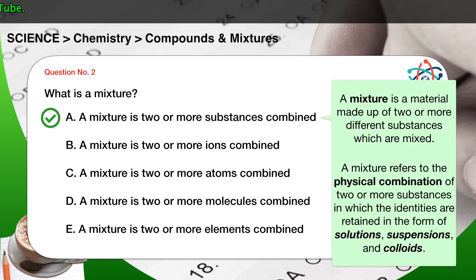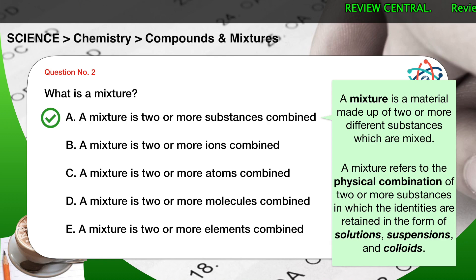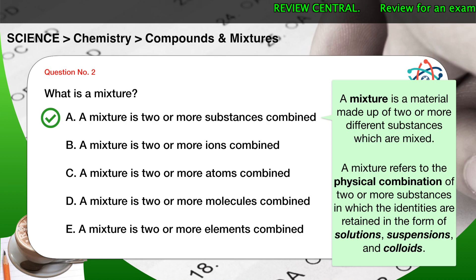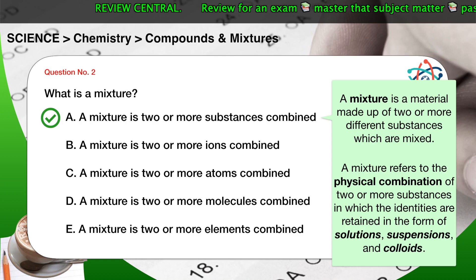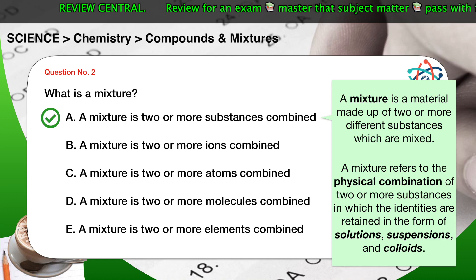The correct answer is A. A mixture is a material made up of two or more different substances which are mixed. A mixture refers to the physical combination of two or more substances in which the identities are retained in the form of solutions, suspensions, and colloids.